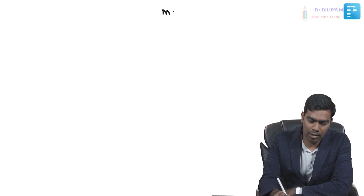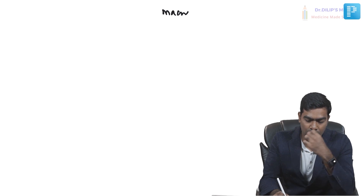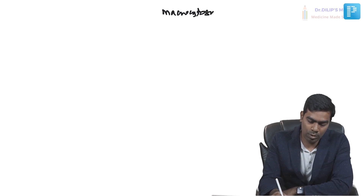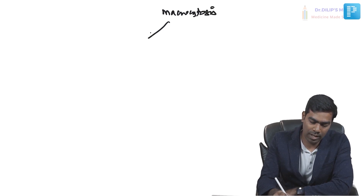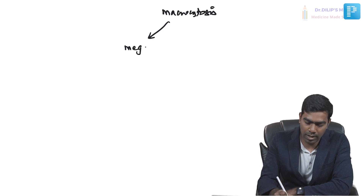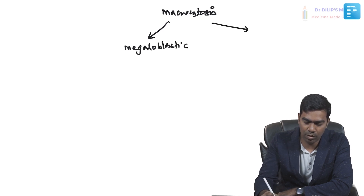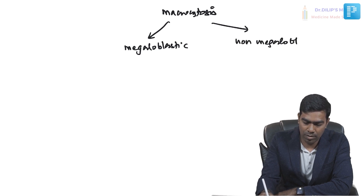As I already told you, we have two types of macrocytosis. Whenever you say macrocytosis, you have two different types: one is called megaloblastic macrocytosis, and the second one is called non-megaloblastic macrocytosis.